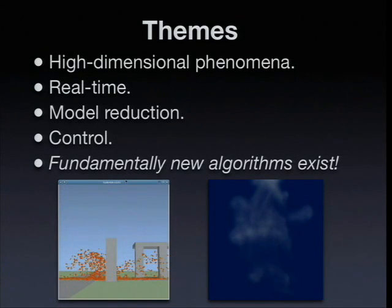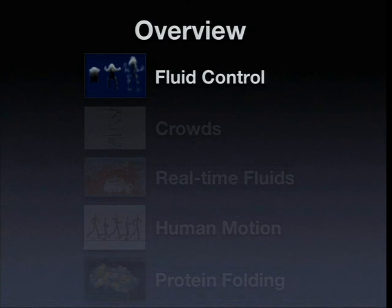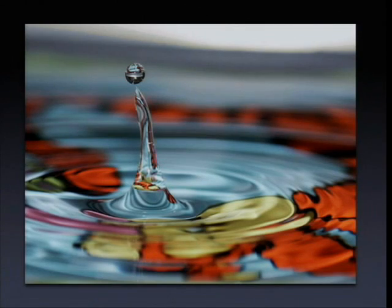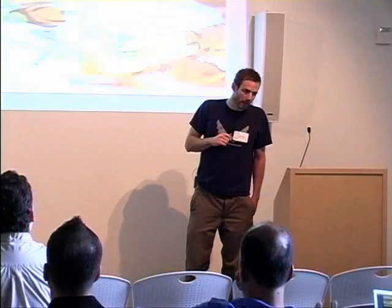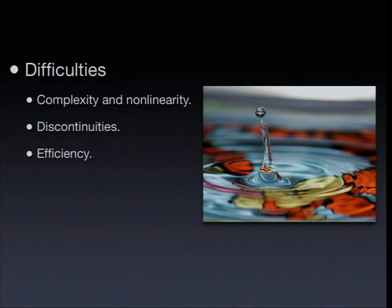We're going to look at these themes over five topics. The first is fluid control. Fluid dynamics are a ubiquitous part of the world around us, with a lot of complex dynamical behavior. The difficulties are the complexity and non-linearity of the fluids. If you're dealing with free surface fluids, there's a discontinuity at the surface of the water which makes the dynamics more difficult to model. And there are major efficiency concerns with respect to the number of variables needed to represent these kinds of systems.